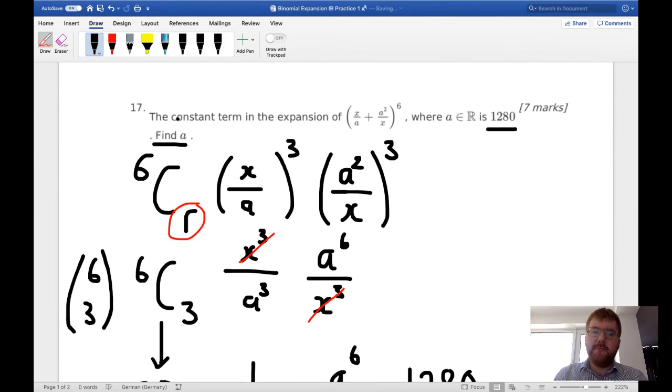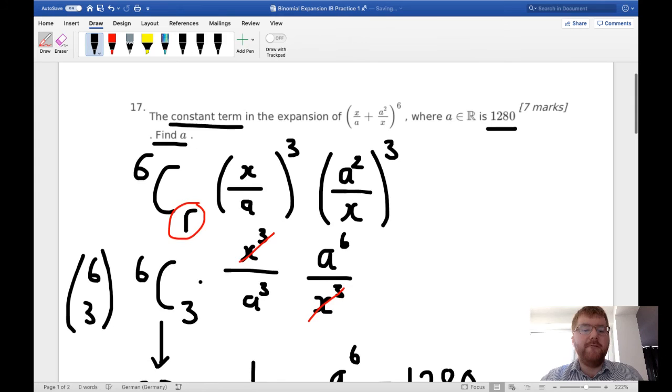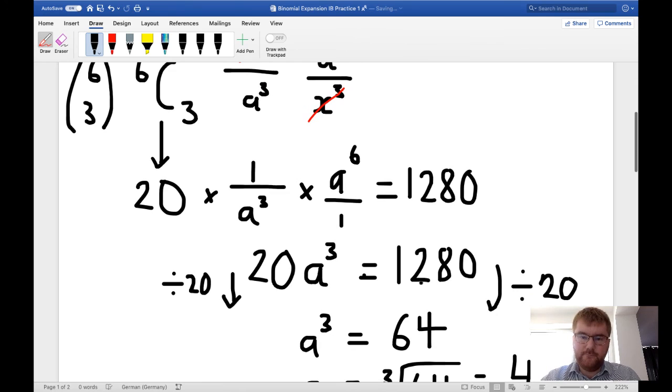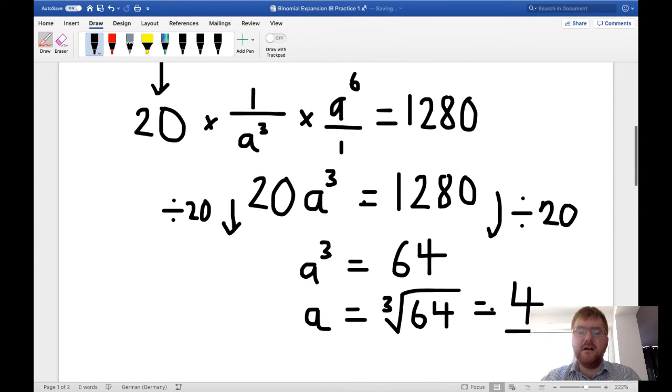So just to go through, we're looking for the constant term, that is the term without any x's. The way we do that, we try different powers of this part and this part to see if they cancel, and we found that 4 and 2 didn't work, but we did find that 3 did work on both of them, because they cancel here. And then we think, okay, we want the binomial coefficient then that goes in front to be 3, like so. We figured that out in our calculator to give us 20. And then it's a case of simplifying. And then finally, cube rooting to get our answer of a, which gives us 4.